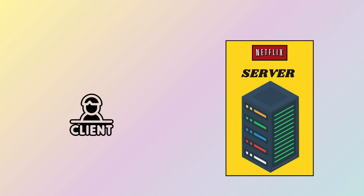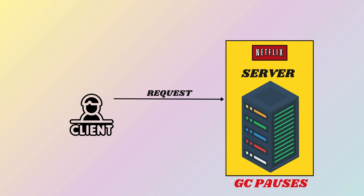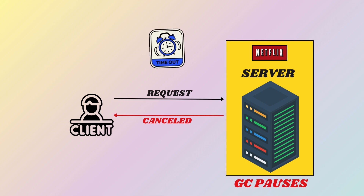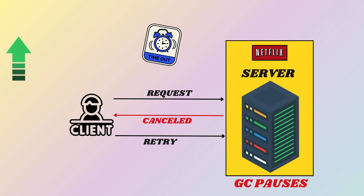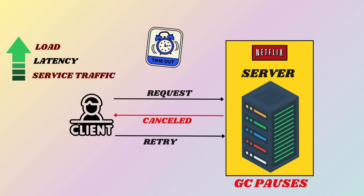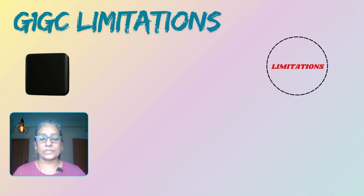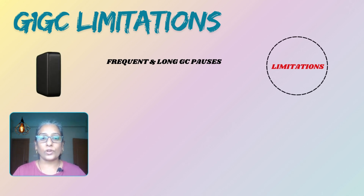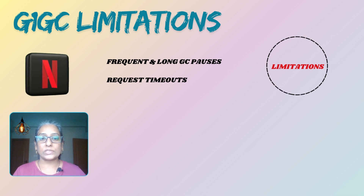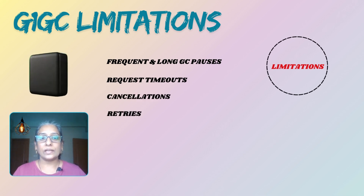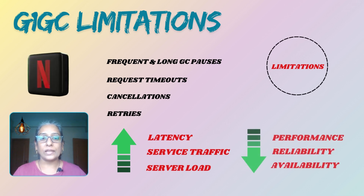Consider this scenario: a user requests a video stream from Netflix. The service experiences a GC pause delaying the response. The user's request times out and is cancelled. The system retries the request, increasing the load and latency further. For Netflix, G1GC limitations became evident in its critical services, leading to frequent and noticeable GC pauses, request timeouts, cancellations, and retries, increasing overall service traffic and impacting performance.